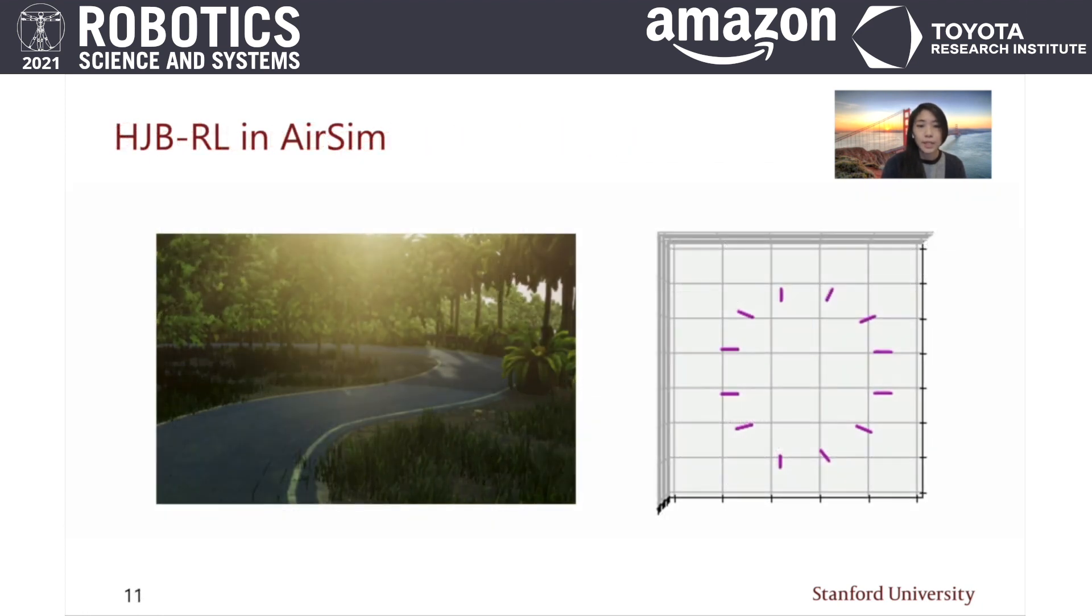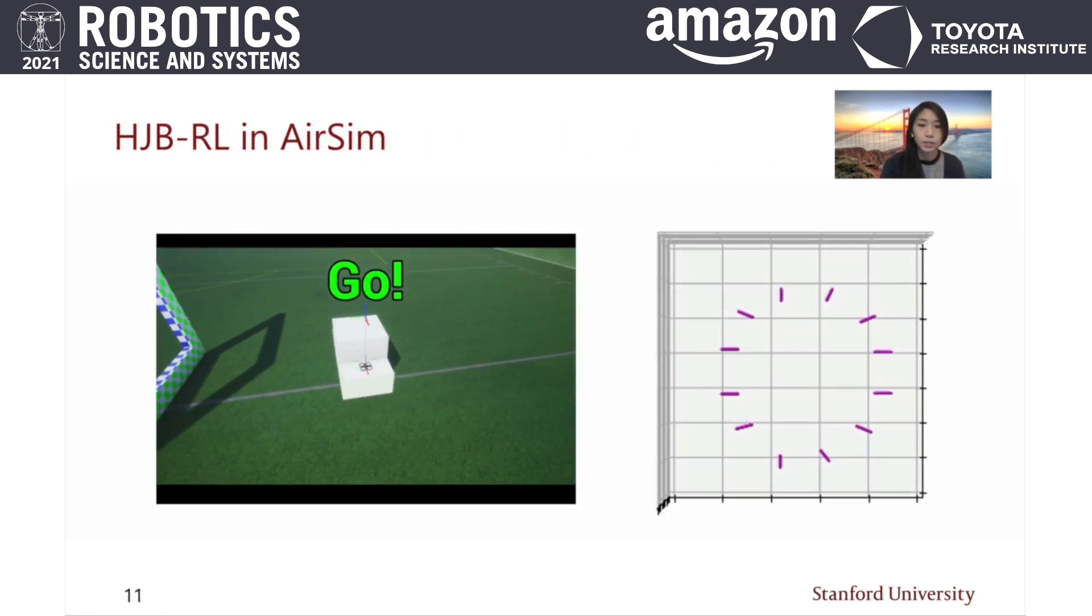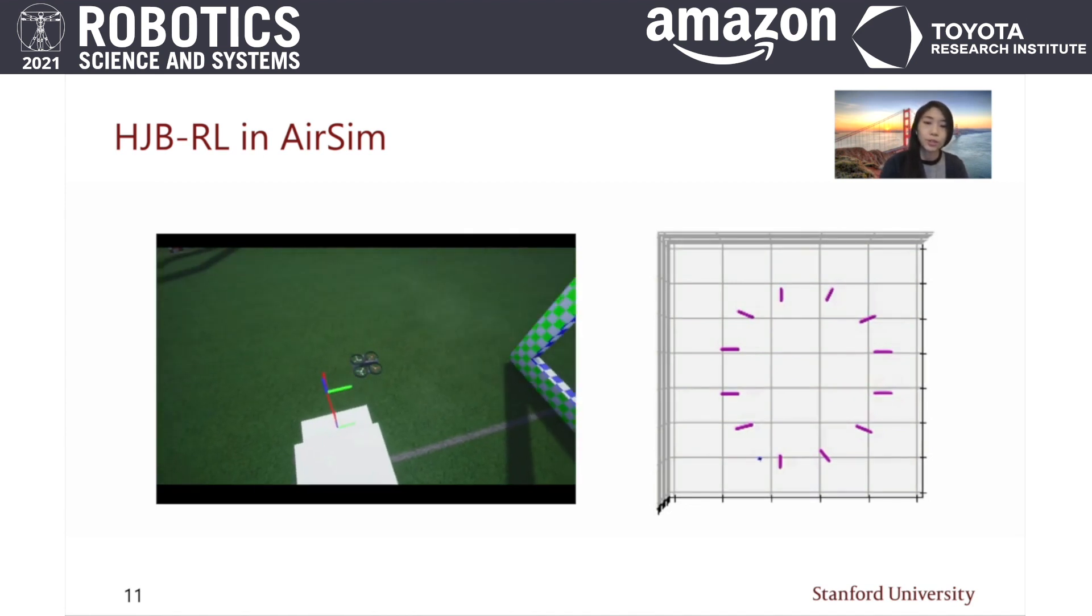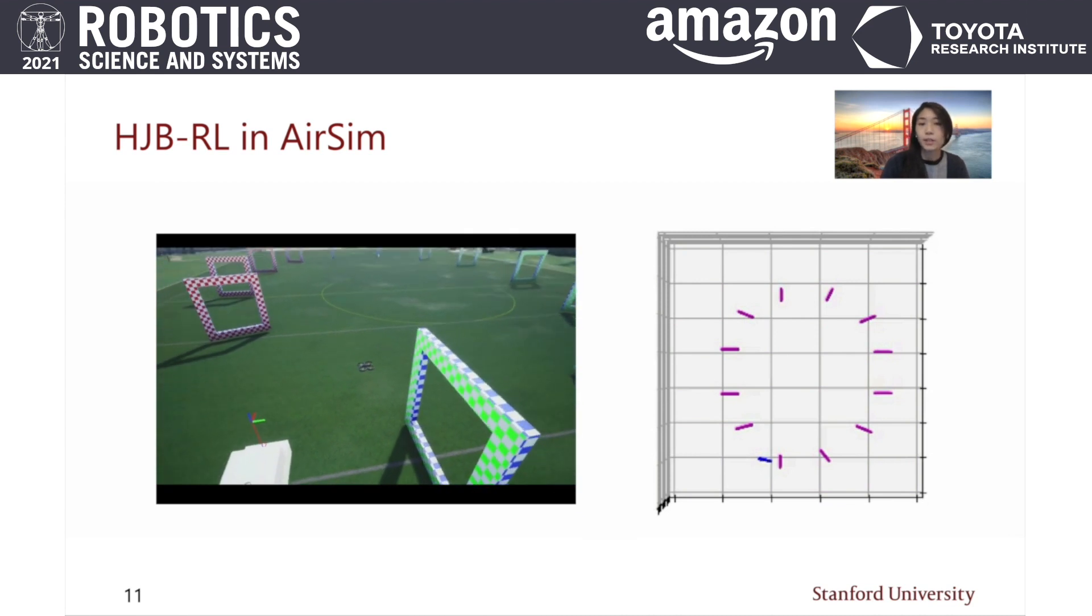Here is an example race of the HJBRL policy traversing through the racetrack. On the right is a bird's eye view of the drone's progress through the track. It is able to pass through all 12 gates without collisions.